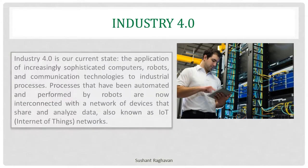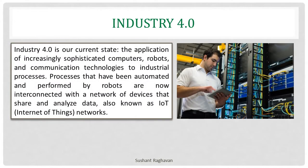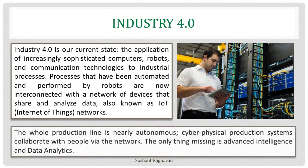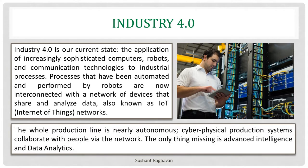Industry 4.0 is our current state — the application of increasingly sophisticated computers, robots and communication technologies to industrial processes. Processes that have been automated and performed by robots are now interconnected with a network of devices that share and analyze data, also known as IoT, Internet of Things networks. The whole production line is nearly autonomous, and cyber-physical production systems collaborate with people via the network. The only thing missing is advanced intelligence and data analytics.